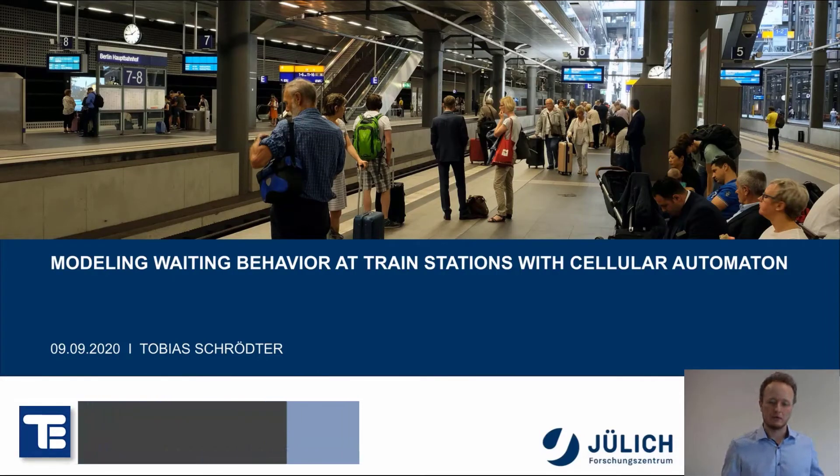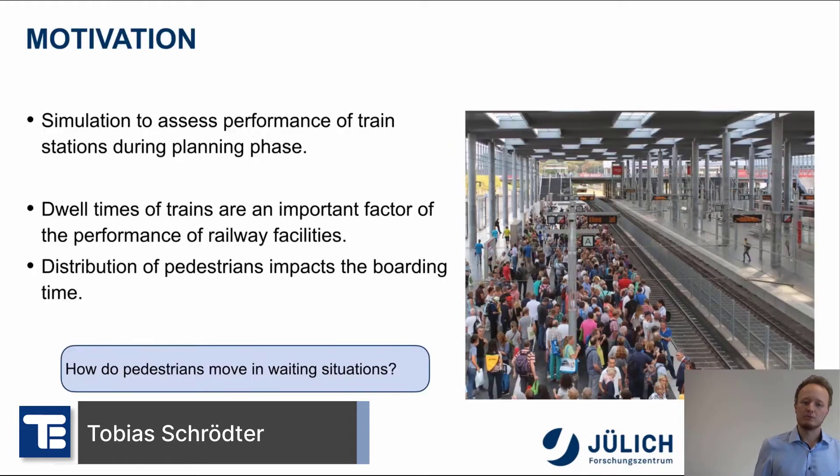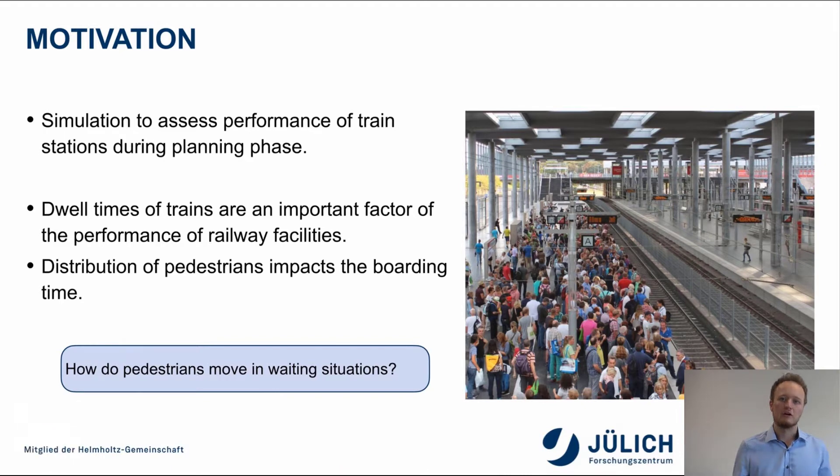Hello and welcome to the talk about modeling waiting behavior at train stations with cellular automata. In recent years, simulations gained importance as tools to evaluate the performance of buildings already during the planning phase. In the case of train stations, the dwell time of trains is an important factor. It gets highly impacted by the distribution of pedestrians along the platform, as more even distribution means each of the train doors is used more evenly, which leads to faster boarding times. Hence, the more uniform the distribution on the platform, the better the performance of the building.